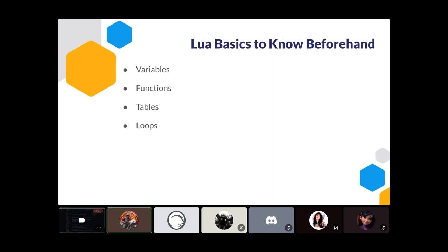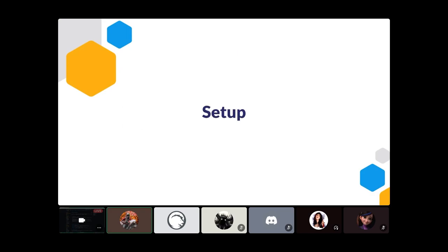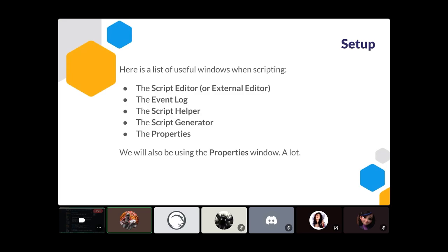Tables are a way to store multiple things, expanding on variables. If you're familiar with other programming languages you might call them arrays or objects — you can store multiple things and pick and choose what to change. Loops work with tables at times; you can iterate through a list of names and print them all out, or do repetitive things like move the player ten times.